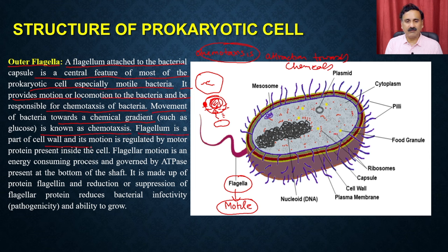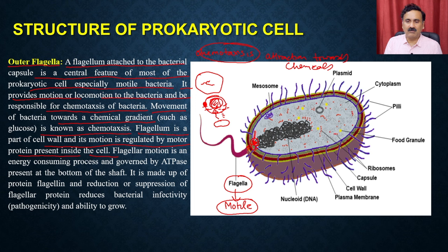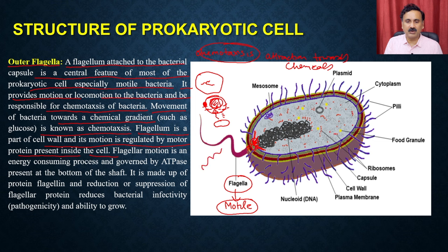Flagellum is a part of the cell wall and its motion is regulated by motor proteins present inside the cell. Flagellum is attached to the cell wall and inside it has motor proteins, just like muscles in humans. Those motor proteins can change the flipping movement — the flagellum actually has a flipping movement. The flagellum motion is an energy-consuming process governed by the ATPase present at the bottom of that particular shaft.